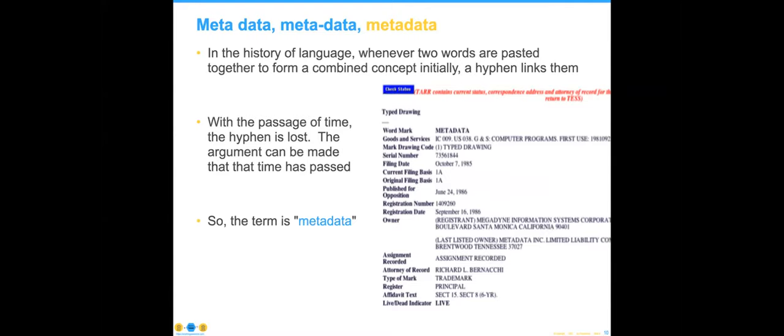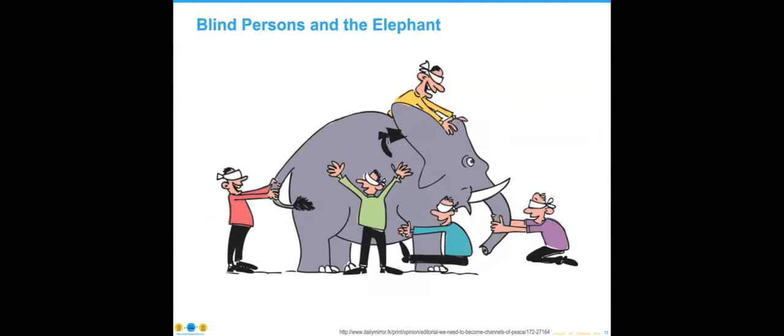We start out with defining metadata. In the history of language, when two words were pasted together to form an initial concept, we started with a hyphen. Over time, the hyphen can be lost and we should use the word metadata. That's important because you wouldn't want to have to search for all three forms of the term. There was also a copyright granted by the US government to somebody on the term metadata — kind of like the joke that Microsoft owns all the zeros and ones — but it has been thoroughly discredited.